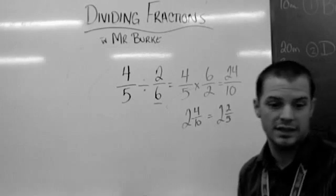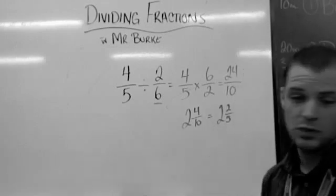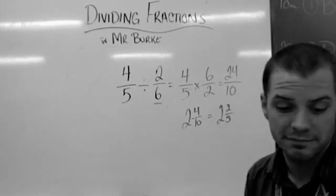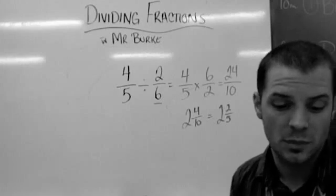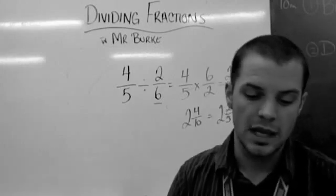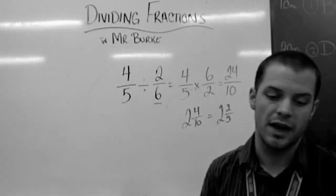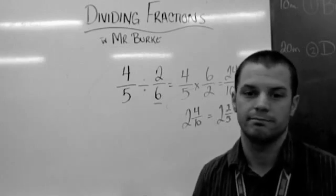So that's pretty much it, you did it. If you got that, 2 and 2 fifths, you got it right. So the process, again: change the mixed number to improper, invert and multiply, simplify it, and convert back to a mixed number. It's that simple.